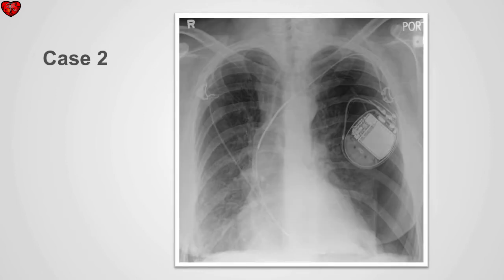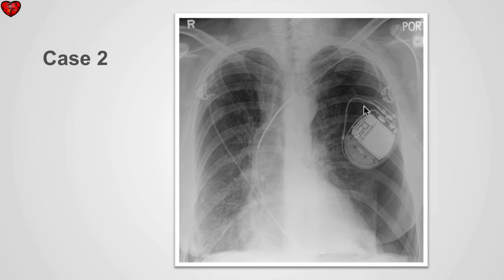In this case, the patient developed acute chest pain and shortness of breath following pacer insertion. We can identify the pacer lead with the tip lying within the right ventricle. We can also identify that there's too much blackness in the left hemithorax, and we can identify the edge of the lung. The patient has developed a pneumothorax as a complication of pacer insertion.